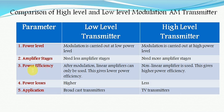The third parameter is power efficiency, calculated after the generation of the AM modulated wave. In low level modulation, a linear amplifier is used after modulation, which gives lower power efficiency. In the high level transmitter, a class C or non-linear power amplifier is used, giving higher power efficiency. Regarding power losses: in the low level transmitter, more power is lost, whereas in the high level transmitter, less power is lost.